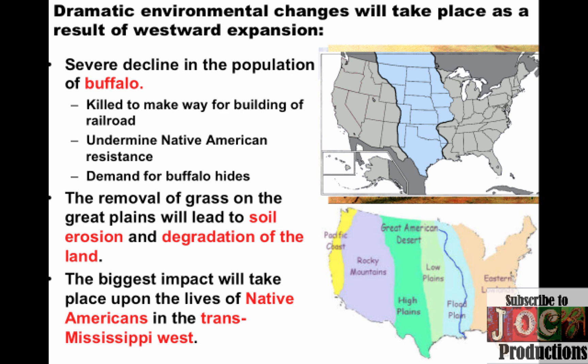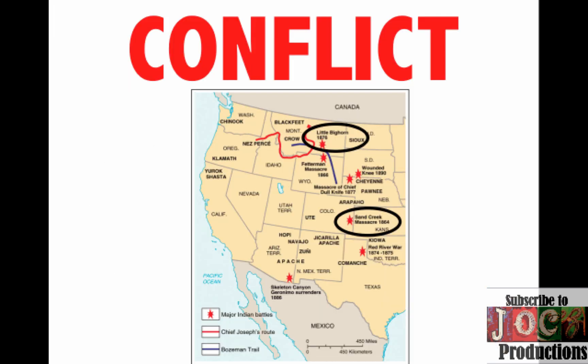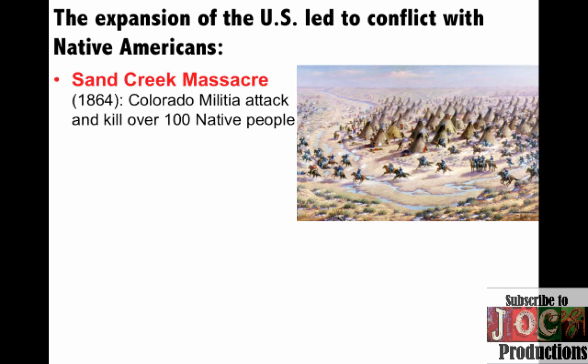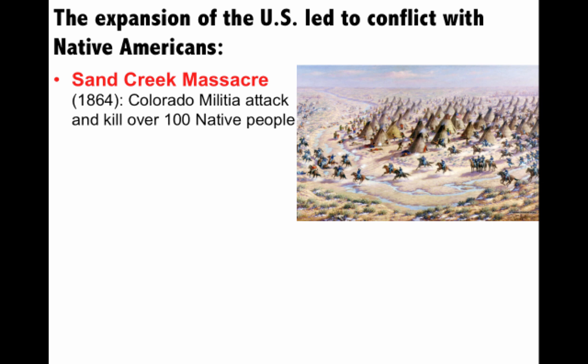The biggest impact took place on the lives of the Native Americans in the Trans-Mississippi West. Native Americans had adapted to their environments over many years, and western expansion led to brutal conflict. The Sand Creek Massacre in 1864 saw a Colorado militia attack and kill over 100 Native people — truly a massacre because about two-thirds of the victims were women and children.